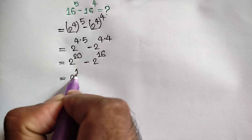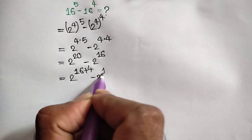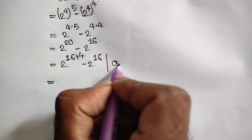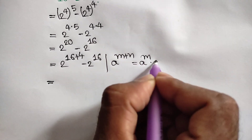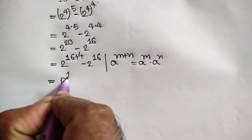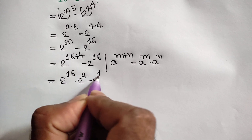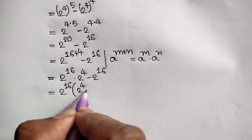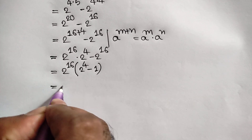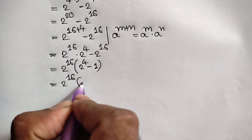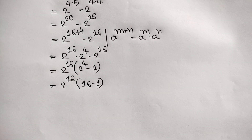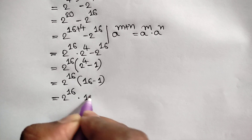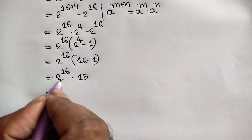So we have 2 to the power 20 minus 2 to the power 16. Now we know that a to the power m plus n is equal to a to the power m times a to the power n. Applying this rule, we can write 2 to the power 16 times 2 to the power 4 minus 2 to the power 16. Taking out 2 to the power 16 as a common factor, we get 2 to the power 16 times 2 to the power 4 minus 1, which equals 2 to the power 16 times 15.